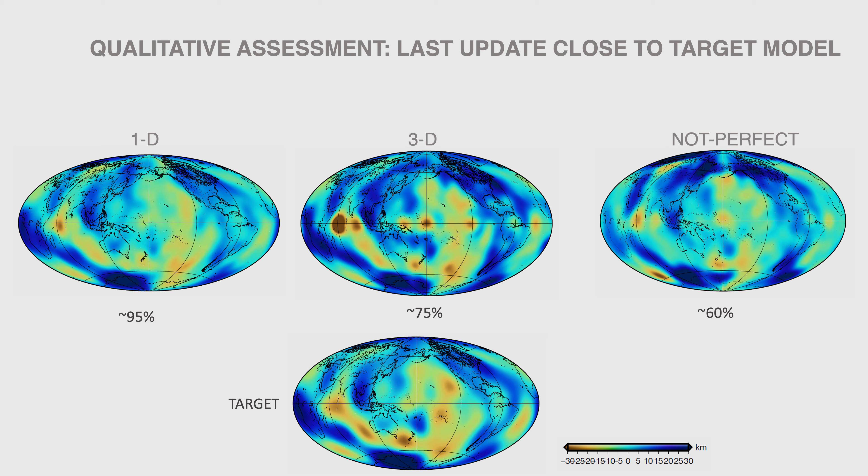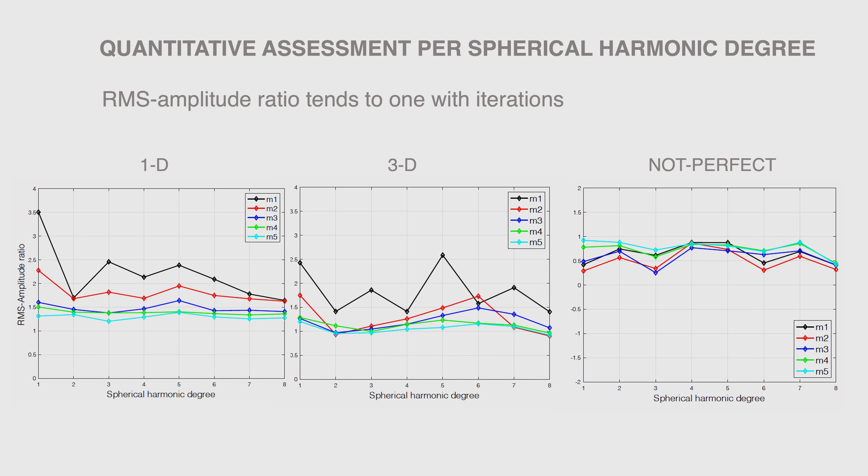For a non-perfect velocity knowledge, this is lower, however still leading to a good model. This also shows that 3D velocity effects are indeed important.